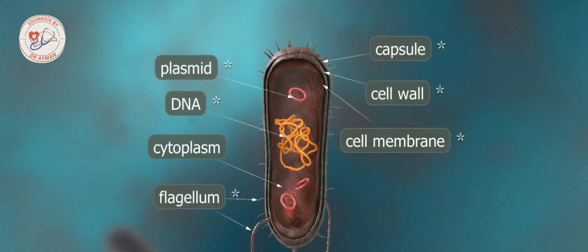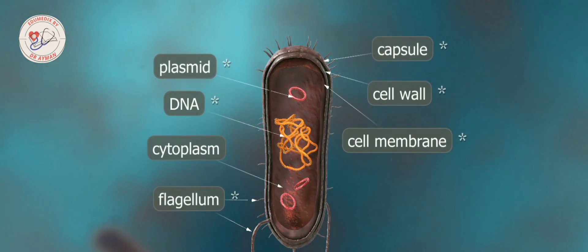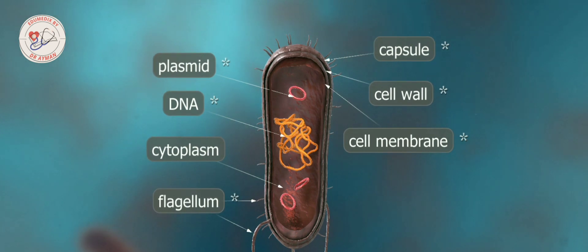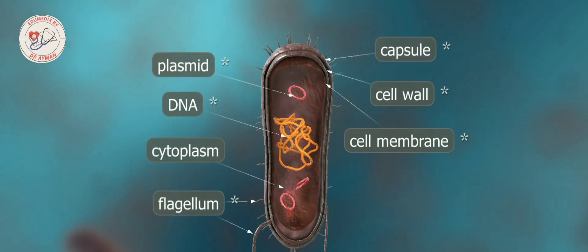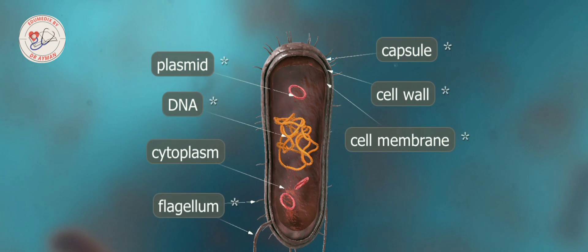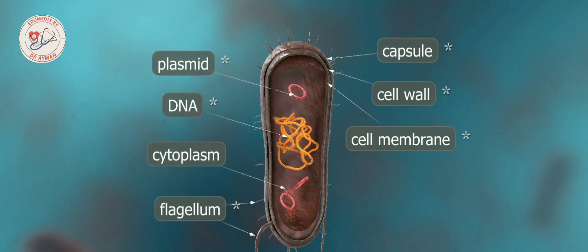All bacteria have a cell wall. It is tough and rigid and is made from proteins and polysaccharides. It provides the cell with structural support and protection.